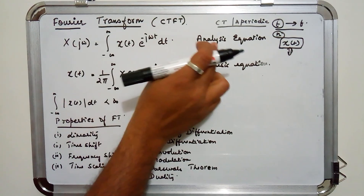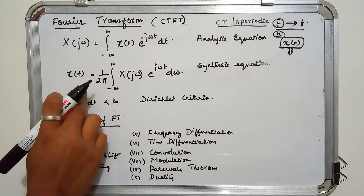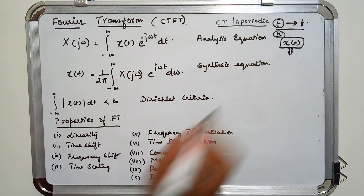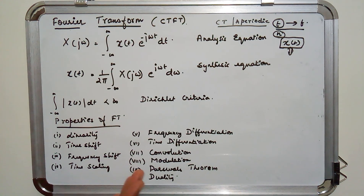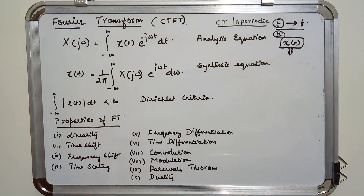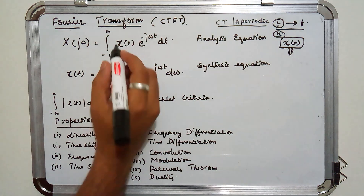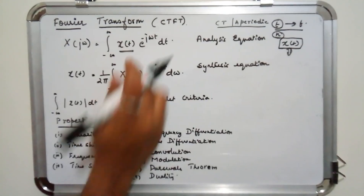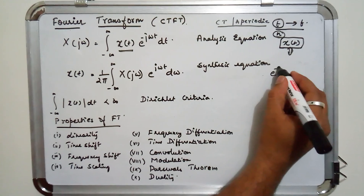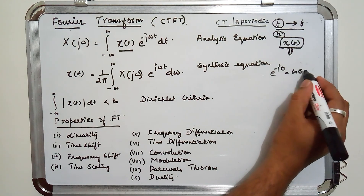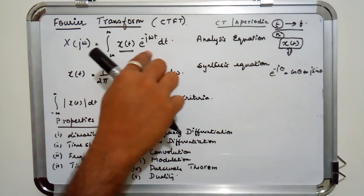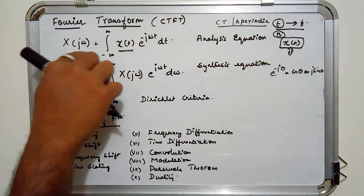This is the Fourier transform equation, called the analysis equation, and this is the inverse Fourier transform equation, called the synthesis equation. The analysis equation gives the relationship between the time domain signal and its multiplication with a complex exponential, in order to get the frequency domain signal. This is the input signal, which is continuous and non-periodic. Multiplying it with a complex exponential — we know that e^(−jθ) = cos θ − j sin θ — gives the Fourier transform of it.